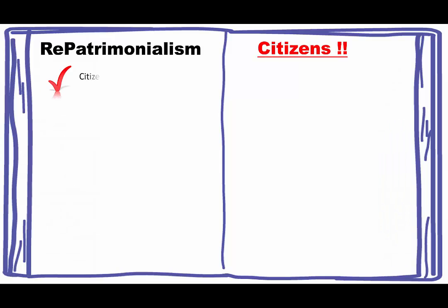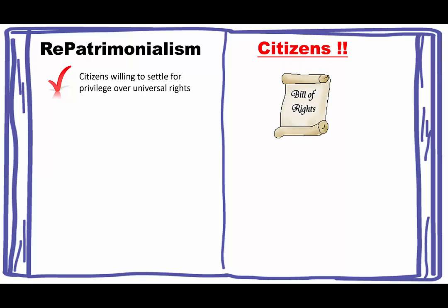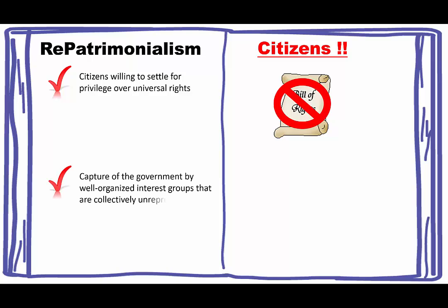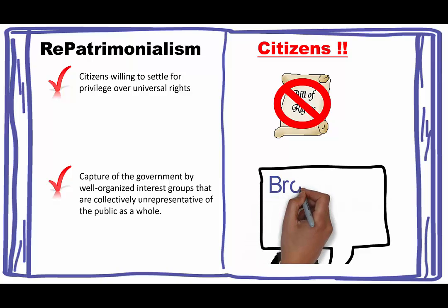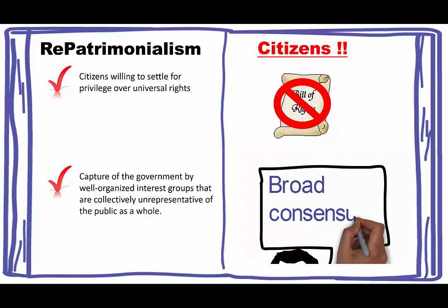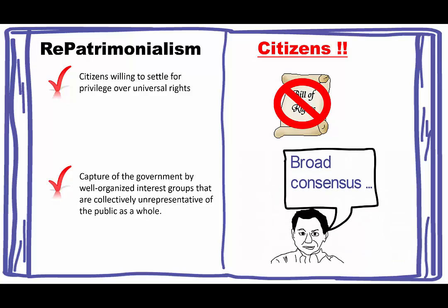Repatrimonialism is about the citizens. This is where citizens are willing to settle for privilege over universal rights — willing to overlook some of the guarantees of the Bill of Rights in order to get some kind of special privilege for themselves. Related to this is the capture of the government by well-organized interest groups that are collectively unrepresentative of the public as a whole. Fukuyama's main point is that we have to have broad consensus, and well-organized interest groups undermine that.